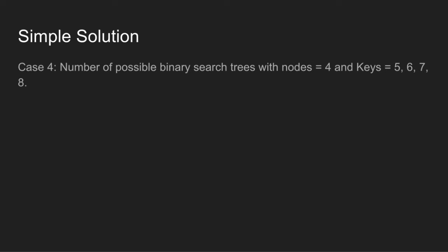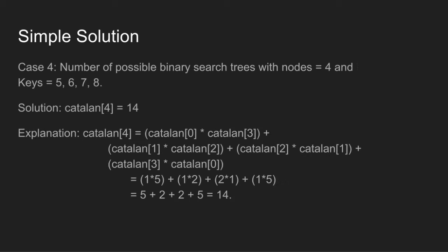Case 4 is to find number of possible binary search trees where nodes are 4 and keys are 5, 6, 7, and 8. Case 4 can be directly solved using this simple logic. There is no hassle of drawing possible binary search trees. Catalan of 4 is calculated by choosing 4 different values of root node: when root is 5, plus when root node is 6, plus when root node is 7, plus when root node is 8. So Catalan of 4 becomes 14.